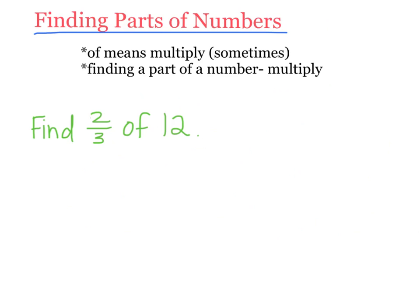Now I'm going to show you how to find parts of a number. For instance, you might need to find 2 thirds of 15 — that's finding a part of a number. You could also find a half of a third. A fraction is like a part, so anytime you're trying to find a fraction of a number, you can actually multiply. There's a key word that shows up a lot in math: the word 'of.' When you see that word, a lot of times it means to multiply.